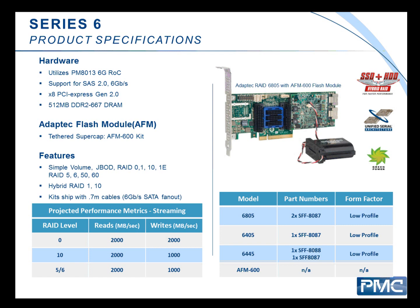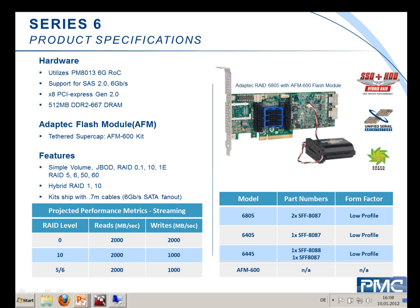You can also see here a flash module which we have installed. We call this the AFM — Adaptec Flash Module 600. This flash module is a replacement for the battery technology we've been using for several years. Now with this new technology we call it zero maintenance, because there's no more need to go in and change batteries. It's a super capacitor which holds the charge if the system goes down with no power.